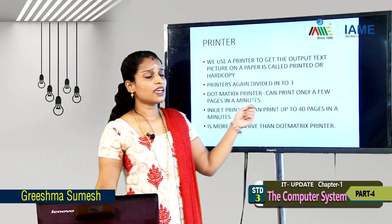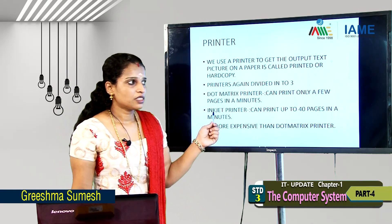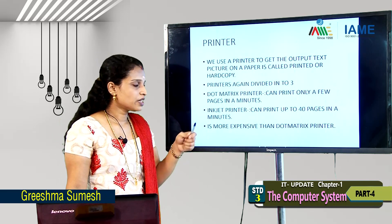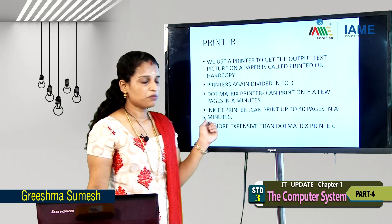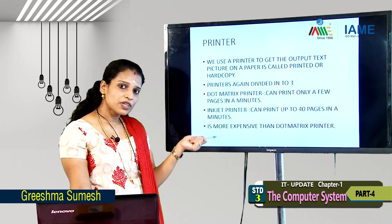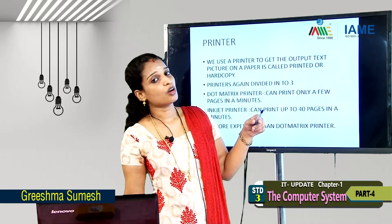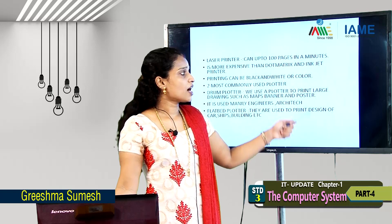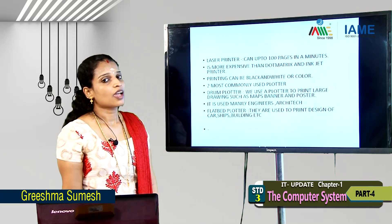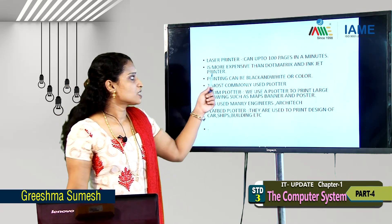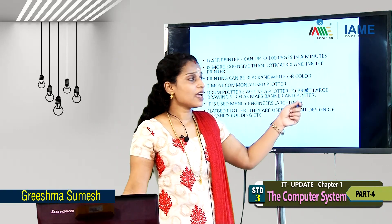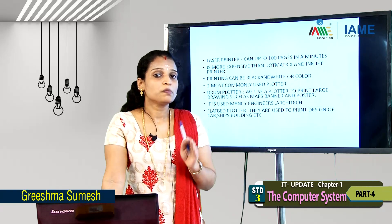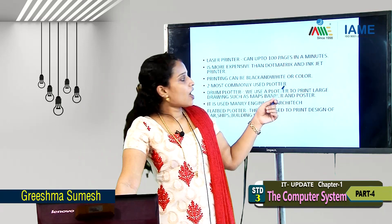Dot matrix printer can print only a few pages in a minute. Inkjet printer can print up to 40 pages in a minute. Laser printer can print up to 100 pages in a minute. Laser printing is more expensive than dot matrix and inkjet printers. Printing can be black and white or color.